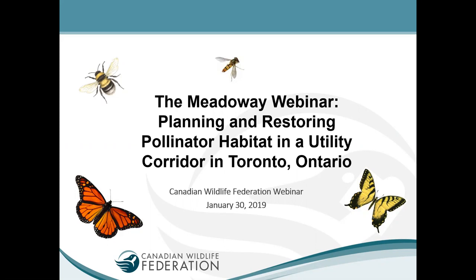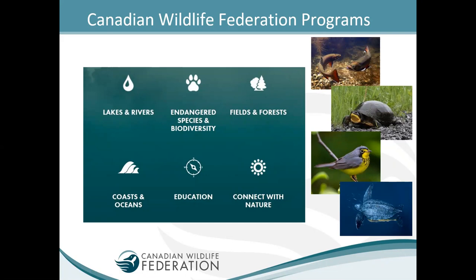I'm James Paget with the Canadian Wildlife Federation. CWF is a national conservation organization with a network of roughly 350,000 supporters across the country. We work on aquatic environments — both freshwater and marine — as well as terrestrial ecosystems, both of which also encompass species at risk, so there's a lot of focus on endangered species.